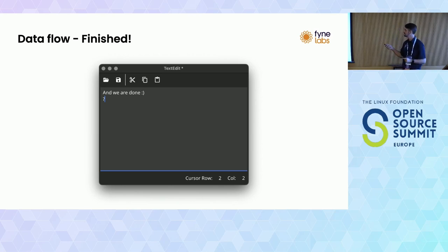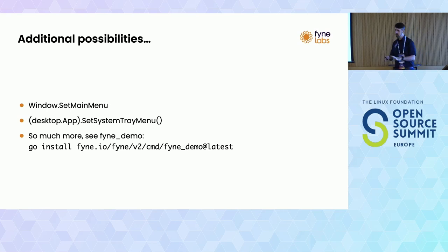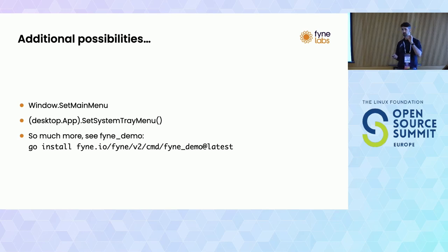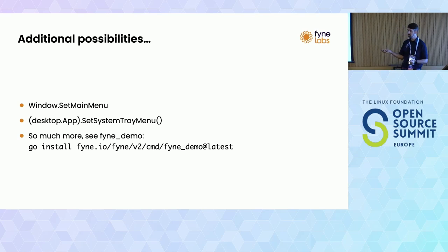And so there we have our complete text editor application, running completely on any platform you choose. We added an asterisk indicator - we could have done more. We could have put a main menu in, which is similar to toolbars: you pass some metadata and actions and it will populate appropriately - on macOS it appears at the top as part of the native bar, on other systems in the window, and on mobile a burger menu slides in from the side. We could also set up a system tray menu.